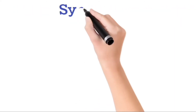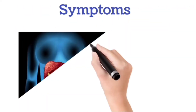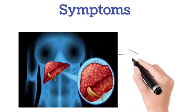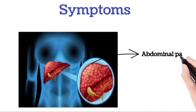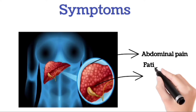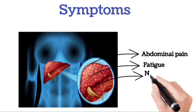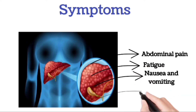Symptoms: An enlarged liver may not cause any symptoms. When enlarged liver occurs because of liver disease, it may be accompanied by abdominal pain, fatigue, nausea and vomiting, and yellowing of the skin and the whites of the eyes.